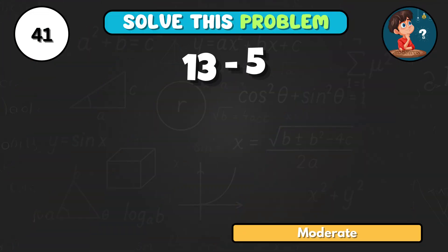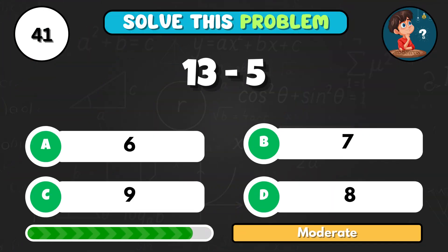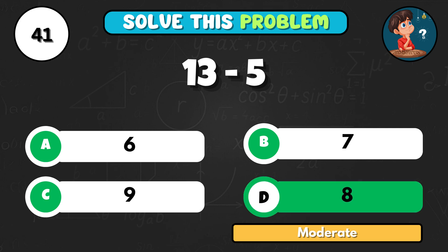13 subtract 5 is equal to… That gives you D8.